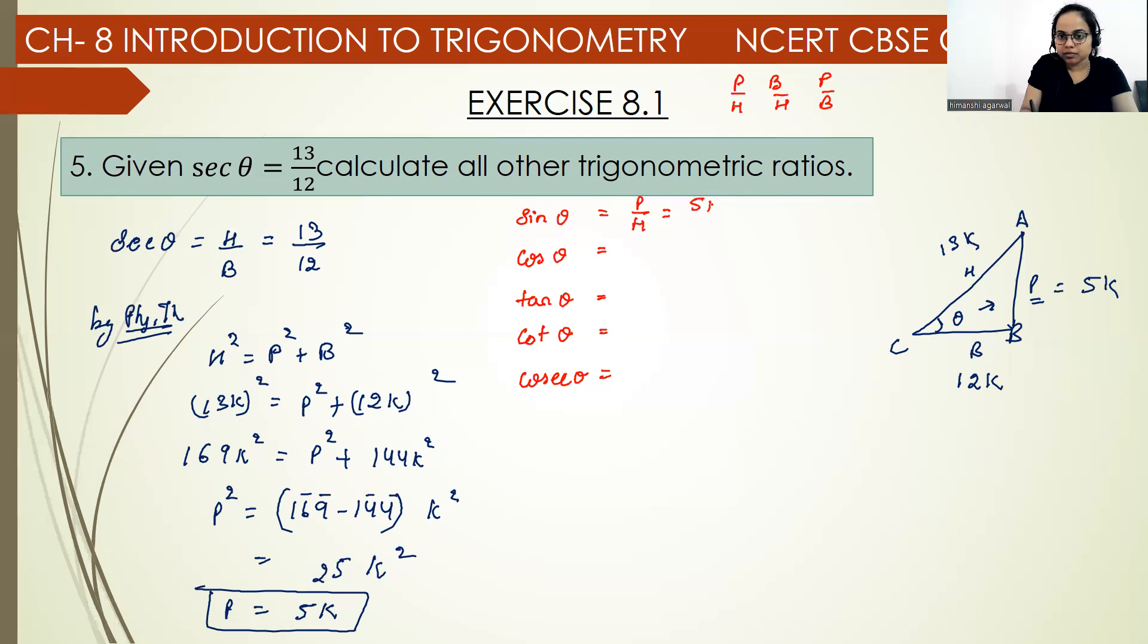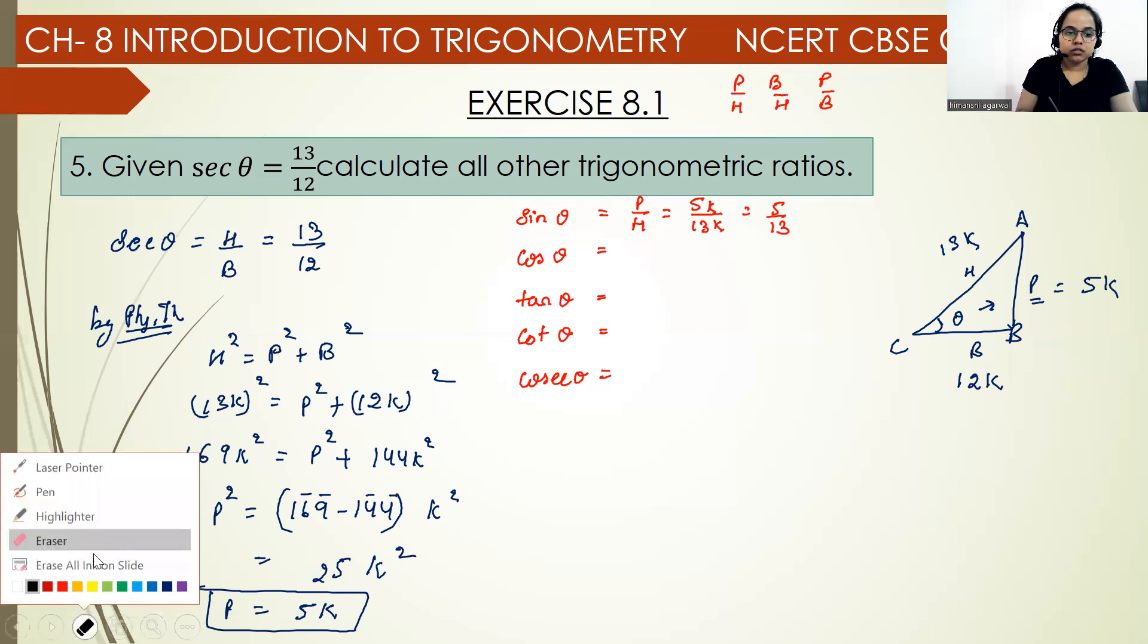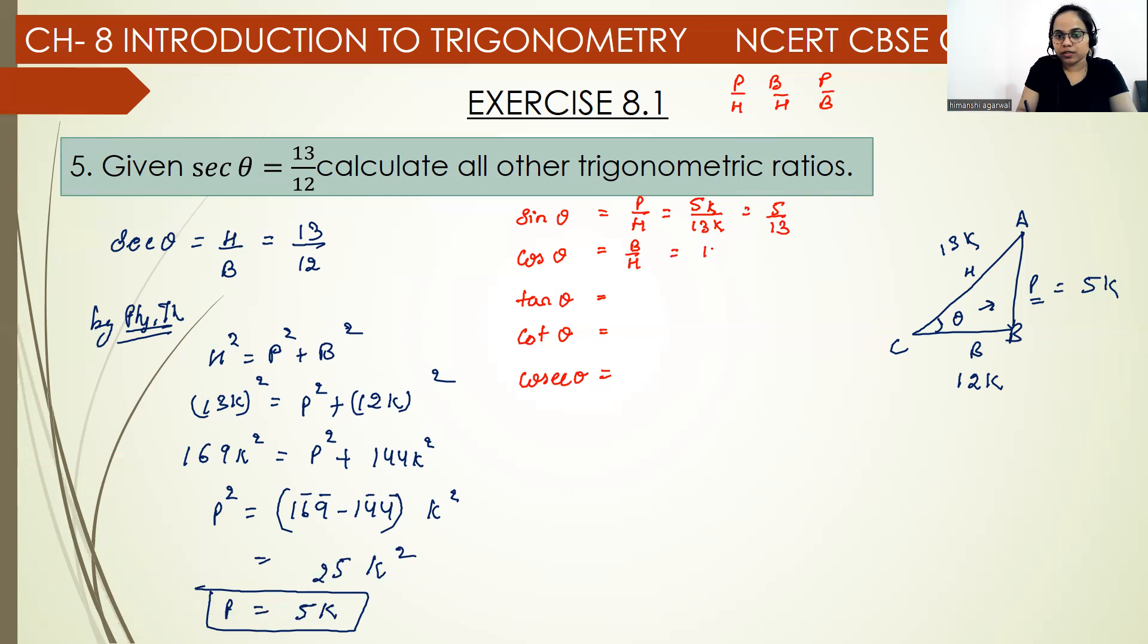Sin theta is perpendicular upon hypotenuse. Perpendicular is 5k and hypotenuse is 13k, so the answer is 5 upon 13. Cos theta, which is reciprocal of sec, is base upon hypotenuse. The base is 12 and hypotenuse is 13, so this is 12 upon 13.